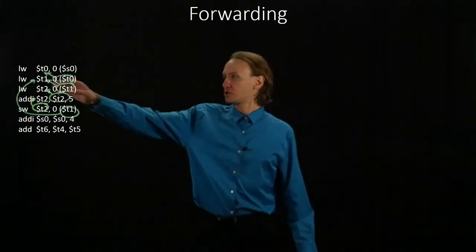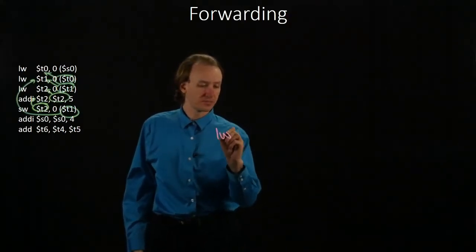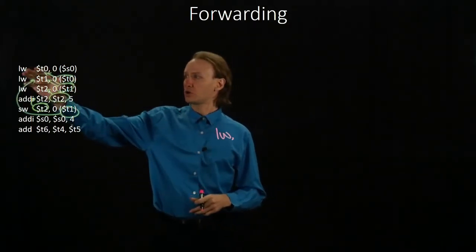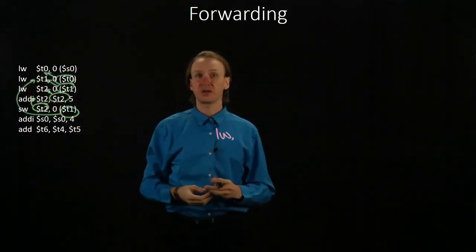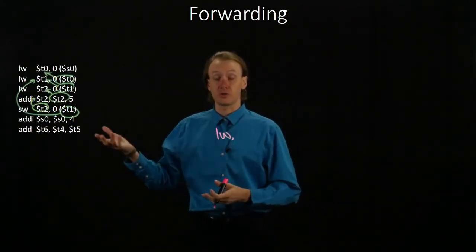So our first instruction is a load word instruction, so it won't have any dependencies. Our second instruction is dependent on the first one. Now our load word instruction will get these results out in the fourth stage, but our next load word instruction would like to use those in the third stage so that it can add zero to them.